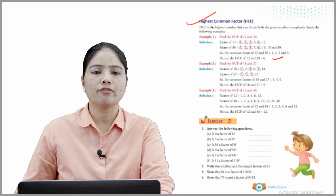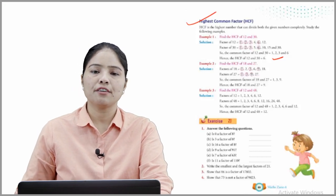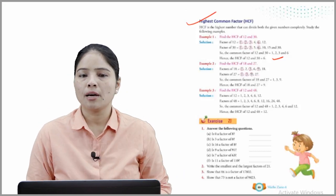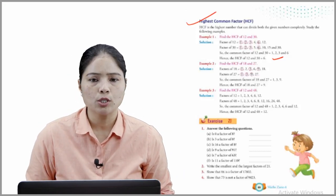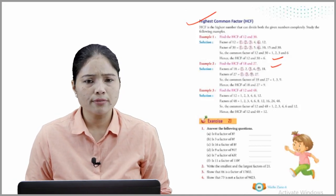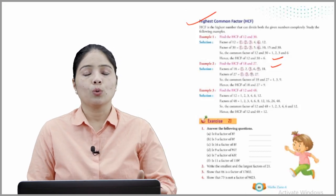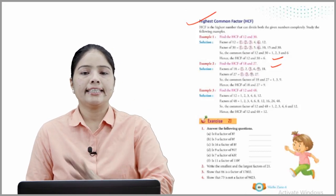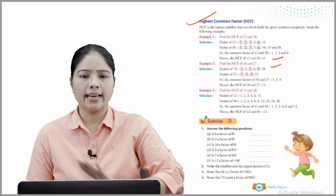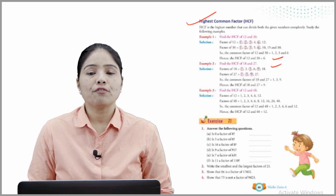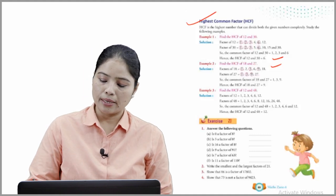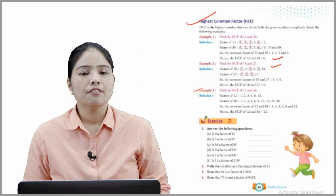Example 2: Find the HCF of 18 and 27. Factors of 18 are 1, 2, 3, 6, 9, and 18. Factors of 27 are 1, 3, 9, and 27. The common factors of 18 and 27 are 1, 3, and 9. Hence, the HCF of 18 and 27 is 9.